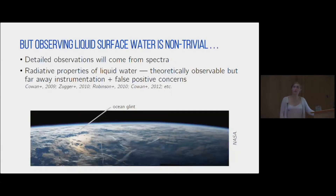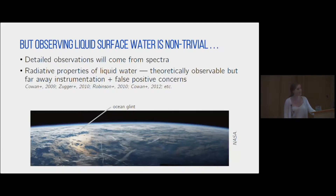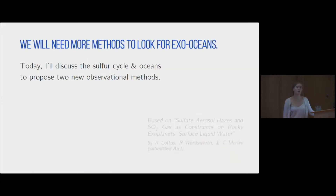Looking farther to the future, trying to actually detect surface liquid water is non-trivial. We're going to be getting our information from various forms of spectroscopy. Right now, all of the methods proposed for detecting liquid water have to do with the radiative properties. These are theoretically observable, but we're going to require very faraway instrumentation. They have some false positive concerns, and they're not going to work for every planet. So if we want to learn about liquid water, we really need to develop some more methods to constrain its presence or absence. Today, I'm going to discuss how we can use the sulfur cycle to propose two new observational methods.